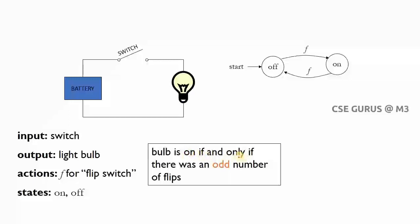The bulb is on if and only if there was an odd number of flips. If I give one flip: on mode; two flips: off mode; three flips: on mode; four flips: off mode; five flips: on mode. Now how is this related to finite automata? In finite automata you also have a set of states, and for a respective input it may change to another state. You have one starting state and one final state.